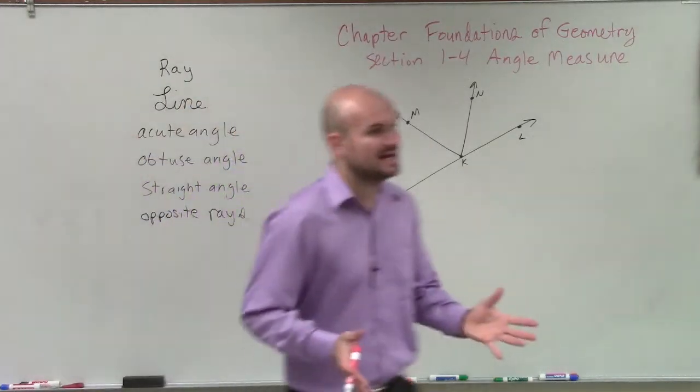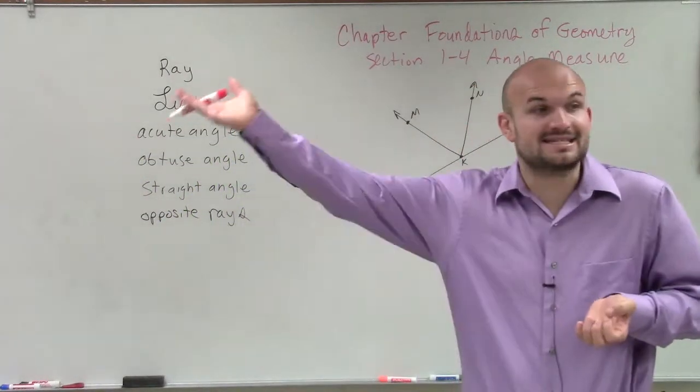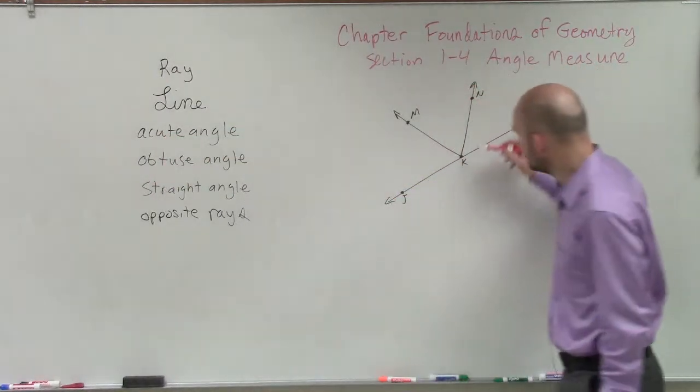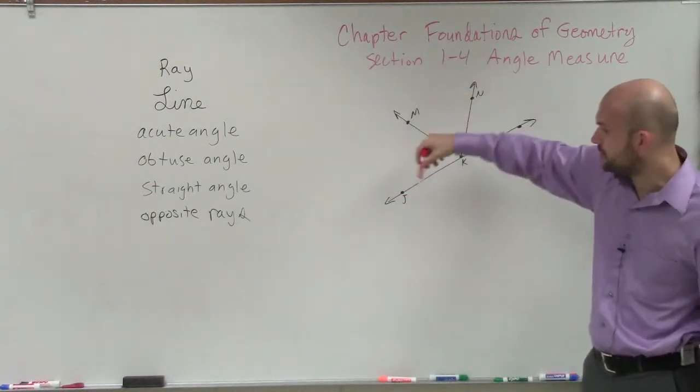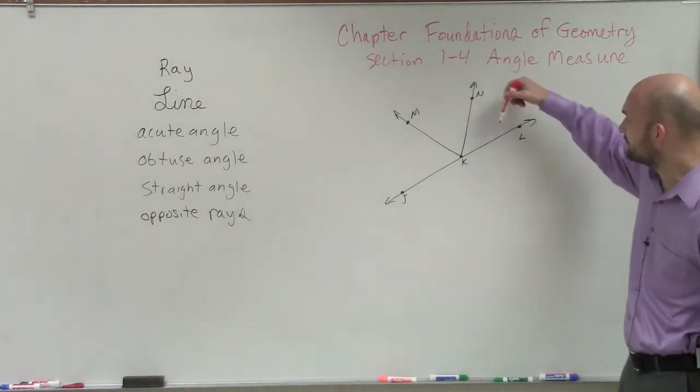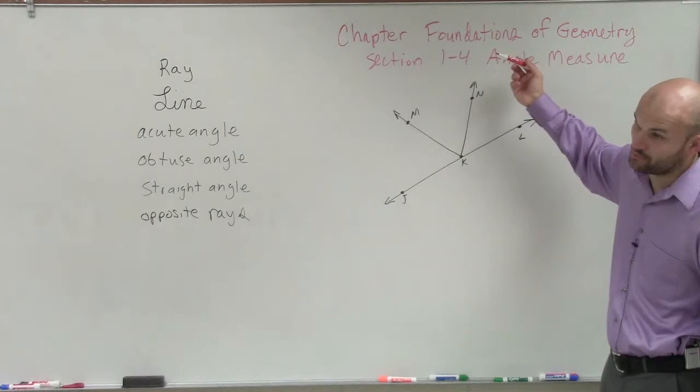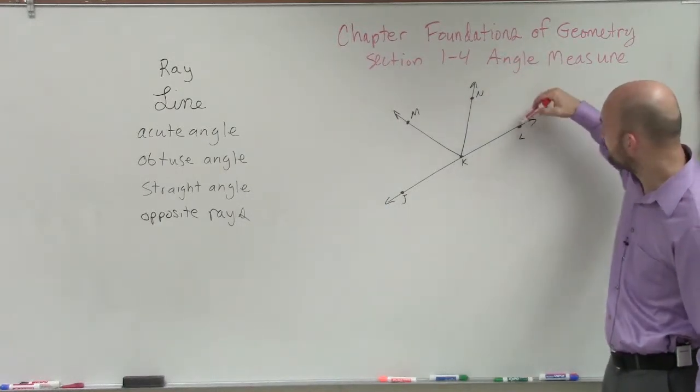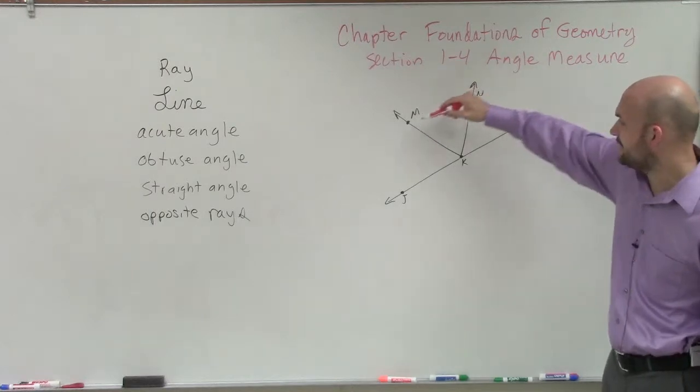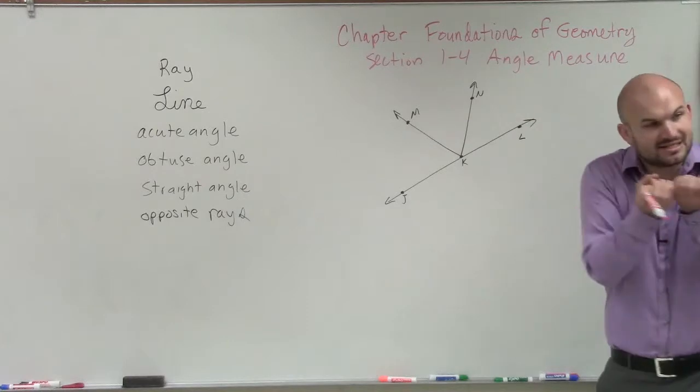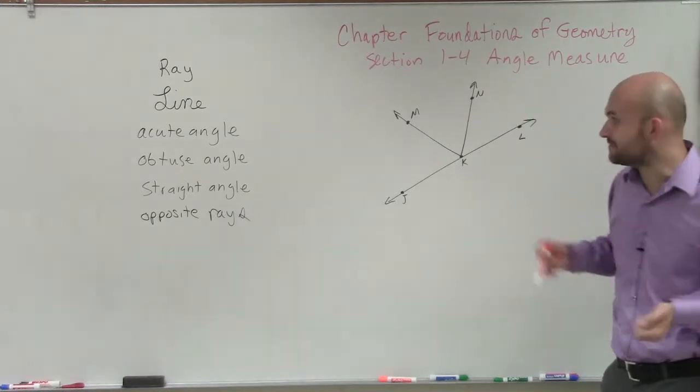So a ray, remember a ray has an endpoint and then it extends indefinitely in one direction. So when looking at this, I see one, two, three, four different rays I could write. All my rays could have different endpoints. Well, actually a couple more rays, because the endpoints could all be different. I could say my endpoint is L, N, M, J, or I could use my endpoint as K. But it doesn't matter, it just has to have an endpoint and then extend indefinitely.